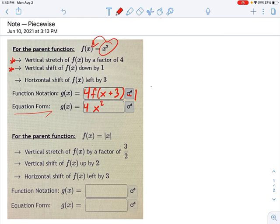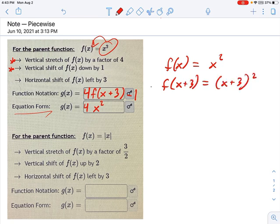But remember, I'm not doing f of x, I'm doing f of x plus 3. So here, let's come over here for a second. If f of x equals x squared, then f of x plus 3 equals x plus 3 squared. So now, I'm going to put that in here. I say 4 times x plus 3 squared minus 1. That is my full equation right here.